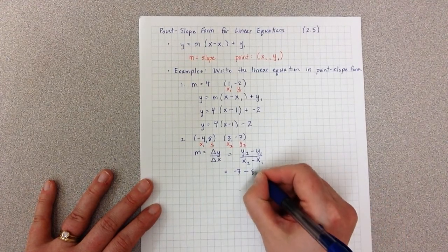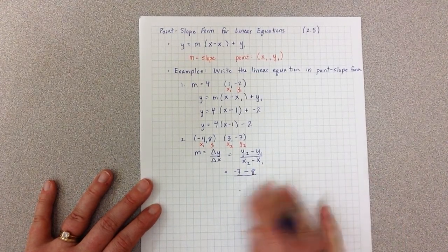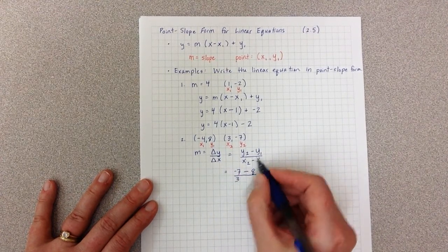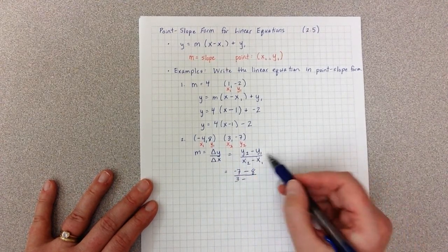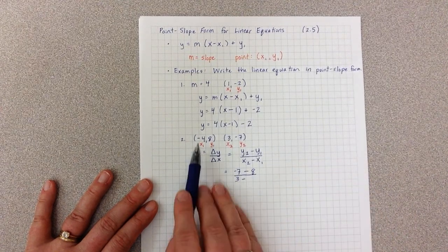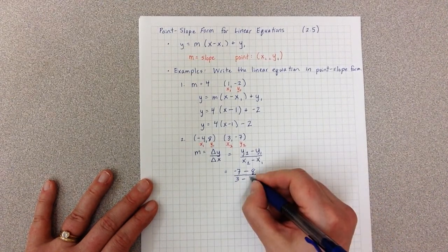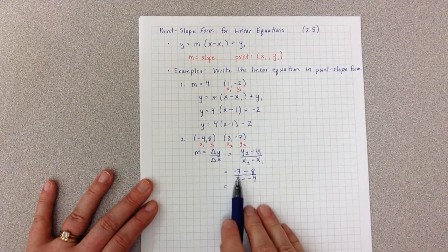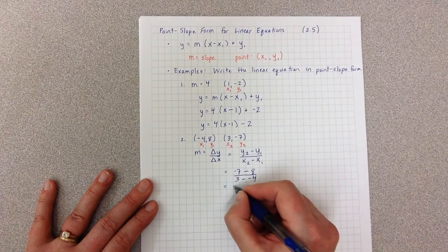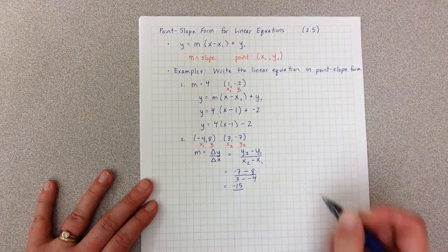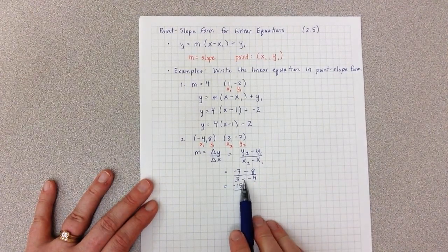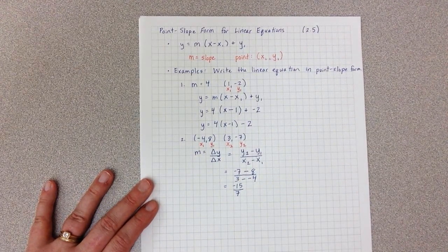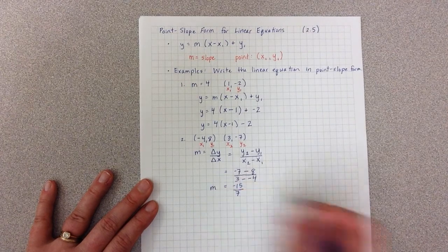my y2 is negative 7 minus whatever y1 is, and y1 is 8, all over x2 minus whatever x1 is, negative 4. So when I simplify this, I've got negative 7 minus 8, which is negative 15. And in the denominator, I have 3 minus negative 4, which is positive 7. So I now have a slope.